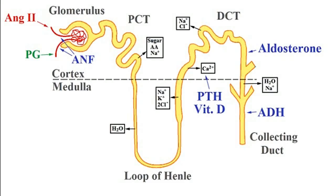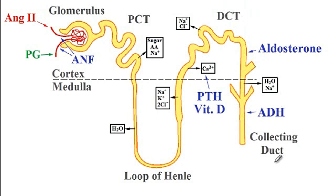In this video, I'm going to talk about different regions of the nephrons that are being affected by hormones as well as medications. Here you can see that we have a nephron starting with the glomeruli, then the proximal convoluted tubule, the loop of Henle, the thin and thick ascending parts, then the distal convoluted tubule, and finally the collecting duct. Aldosterone acts on the cortical part of the collecting duct, while antidiuretic hormone acts on the medullary part.